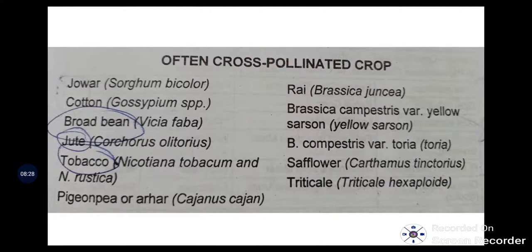Often cross-pollinated crops — important to remember for competitive exams. These include jowar, cotton, broad bean, jute (specifically Corchorus olitorius, which is often cross-pollinated, whereas Indian jute is always self-pollinating), tobacco (Nicotiana tabacum and rustica), pigeon pea (arhar), rye, Brassica juncea, Brassica campestris (yellow mustard), Brassica campestris variety toria, safflower, and triticale. Often cross-pollinated crop examples are frequently asked in competitive exams.